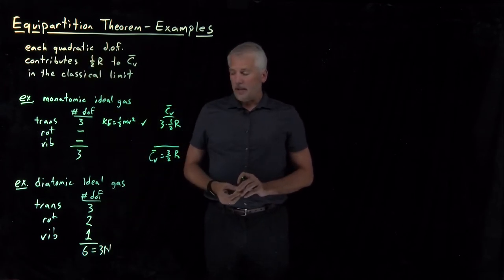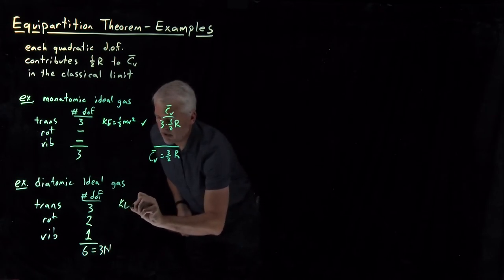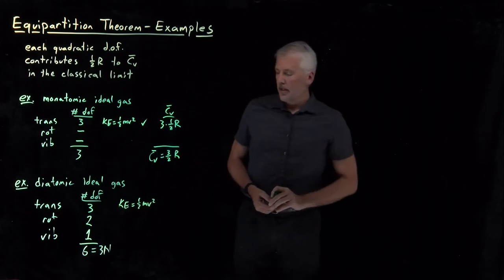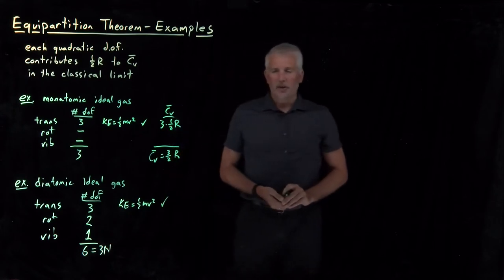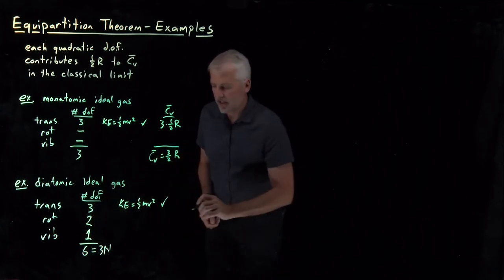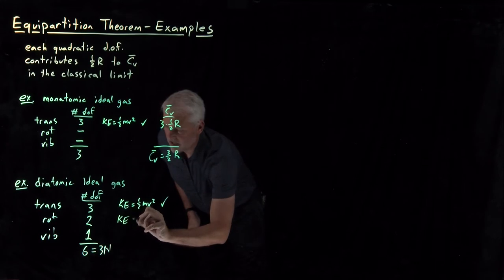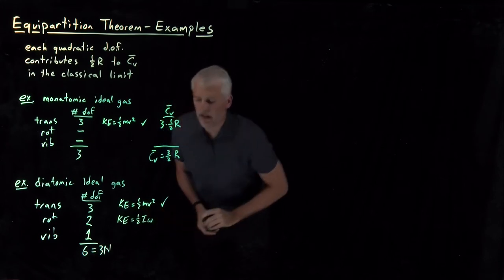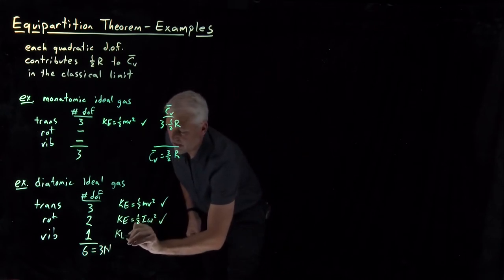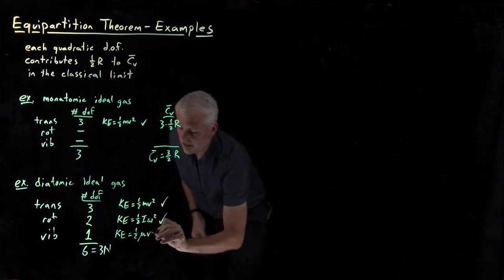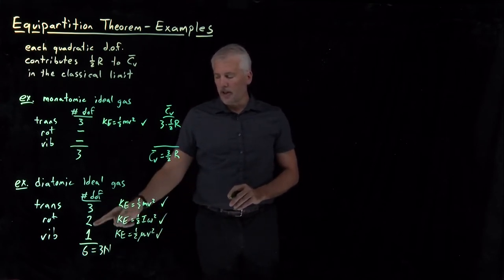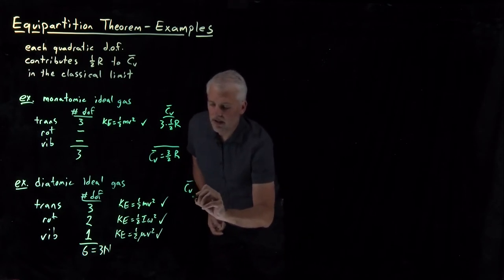We can ask for each type of kinetic energy: the translational kinetic energy is always one-half mv squared — always quadratic. In fact, every type of kinetic energy is quadratic: rotational kinetic energy looks like one-half times the moment of inertia times angular velocity squared, and vibrational kinetic energy looks like one-half times a reduced mass times bond velocity squared. So each of these kinetic energy degrees of freedom are quadratic.